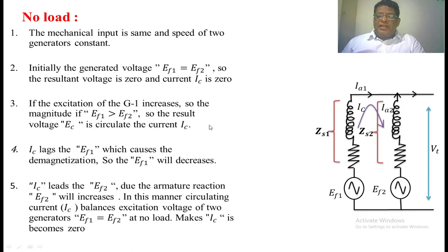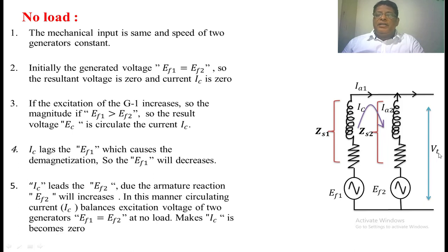EF1 is the excitation voltage of the first generator, and EF2 is the excitation voltage of the second generator. Zs1 is the synchronous impedance of the first generator, and Zs2 is the synchronous impedance of the second generator.